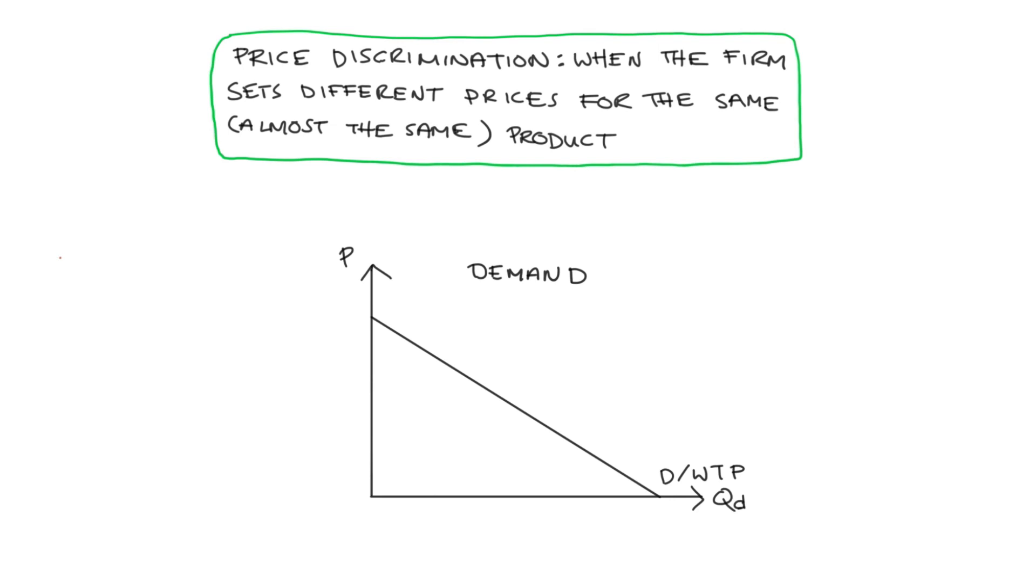So at point A, for instance, the quantity is 40 and the price is 60. Usually we say that this means if the price is equal to 60, 40 units will be demanded. And that's fine. But we can also interpret that as the maximum willingness to pay for the 40th unit is equal to 60. So we're interpreting the height of demand as indicating the willingness to pay for each marginal unit.